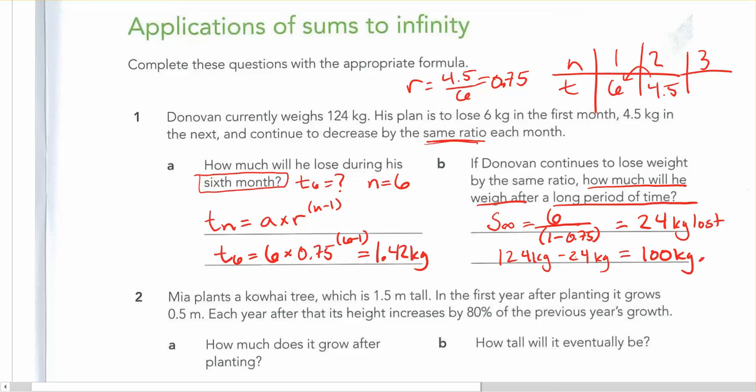So that's an example of what a sum to infinity problem would look like, words like for a long period of time. If you look carefully down here at this next example, how tall will it be eventually. Eventually being, again, for a long period of time. And that's going to be the sum to infinity that you're looking for there to apply.